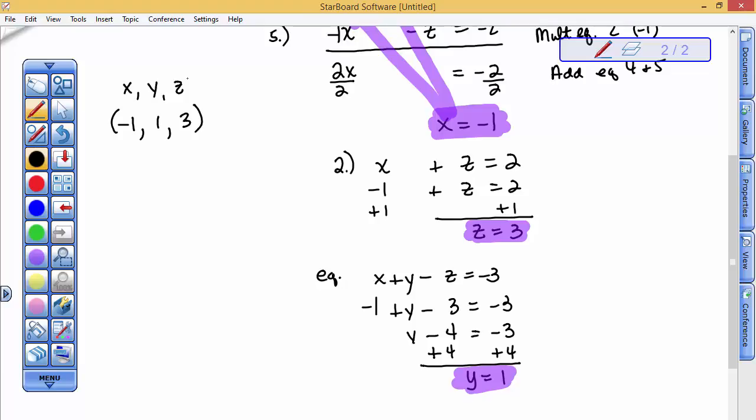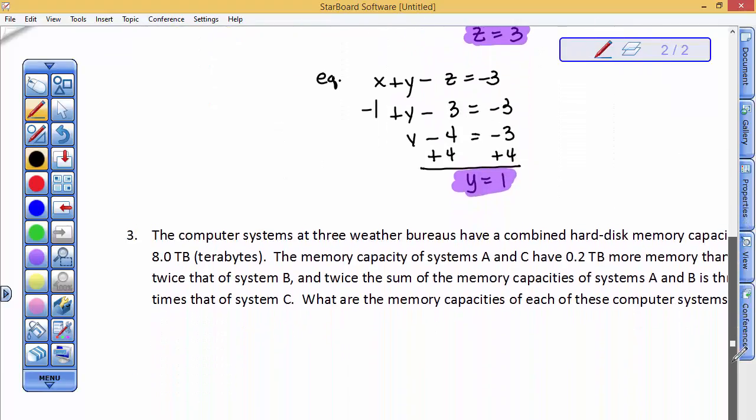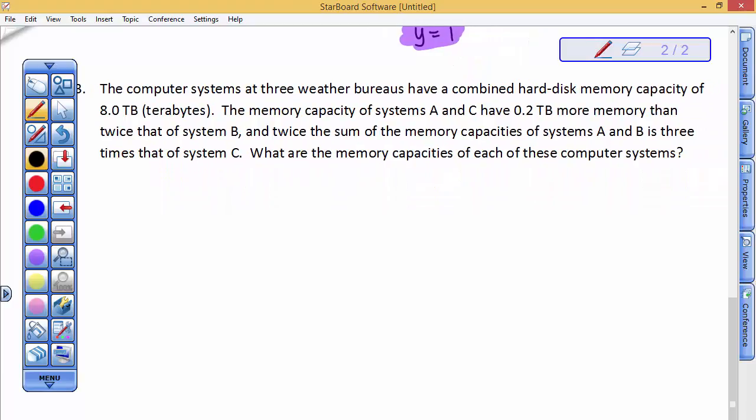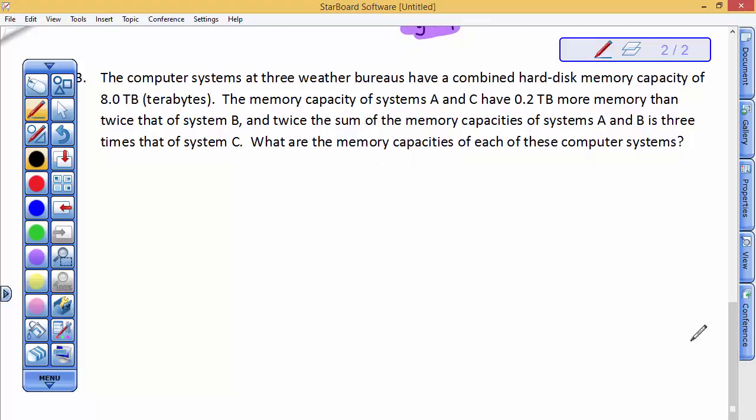You should check those answers in all three of your original equations to make sure that you've completed this correctly. Alright, let's look at a story. The computer system at three weather bureaus have a combined hard disk memory capacity of 8 terabytes. That's one sentence that's going to help us write an equation. The memory capacity of A and C have 0.2 terabytes more memory than twice B. So the combined hard disk memory of 8 terabytes is A plus B plus C equals 8 terabytes.